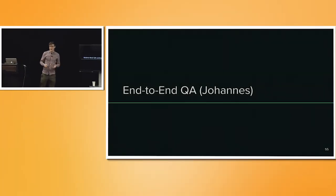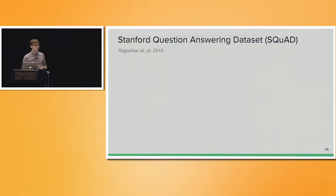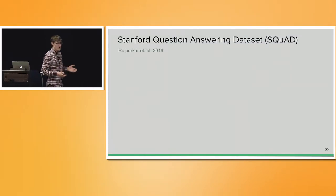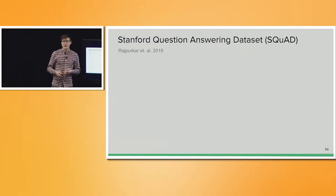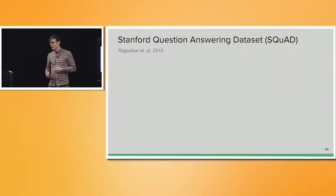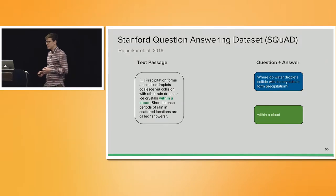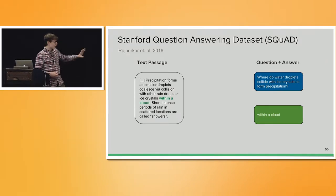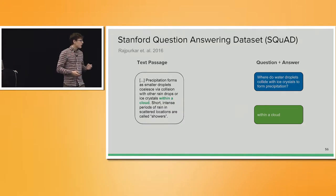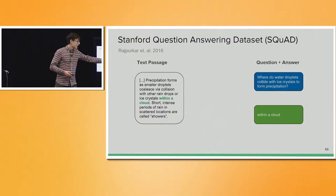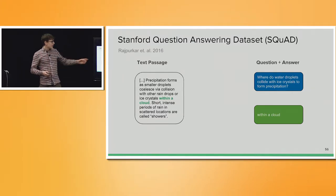I'm Johannes. I will talk about end-to-end question answering. In the beginning, I want to introduce you to a very widely used dataset for question answering on text — the Stanford Question Answering Dataset. This dataset contains examples like these: you're given a text passage, for example a Wikipedia article about precipitation, and you have a question about it, and the answer to that question appears as a span in that Wikipedia article.